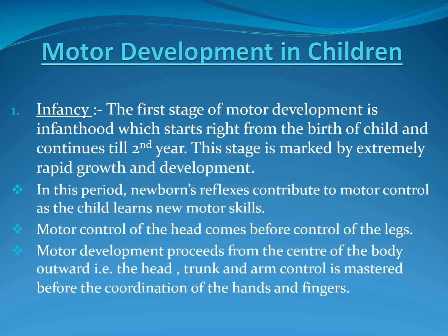Motor development in children. Number 1: Infancy. The first stage of motor development is infancy, which starts right from the birth of the child and continues to the second year. This stage is marked by extremely rapid growth and development. In this period, newborn reflexes contribute to motor control as the child learns new motor skills. Motor control of the head comes before control of the legs. Motor development proceeds from the center of the body outward. For example, head, trunk, and arm control is mastered before the coordination of the hands and fingers.